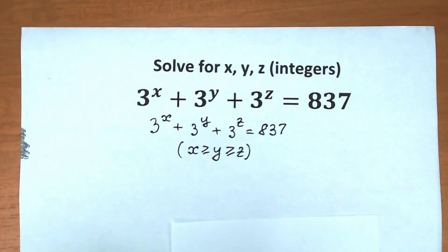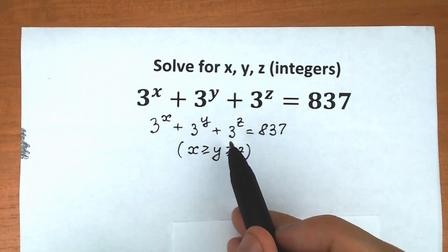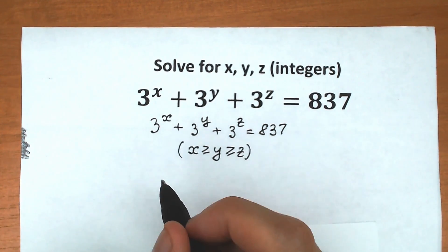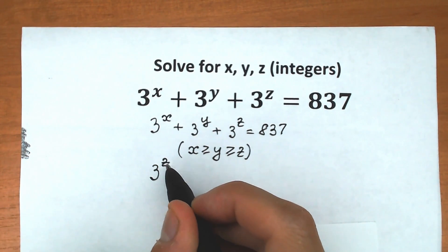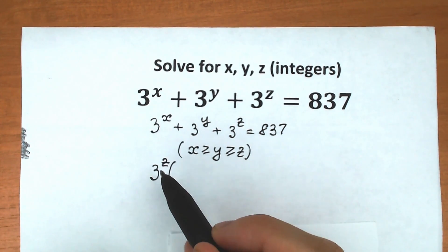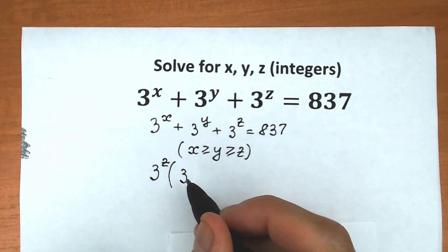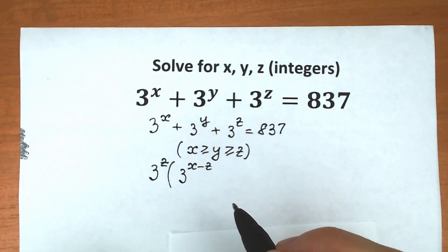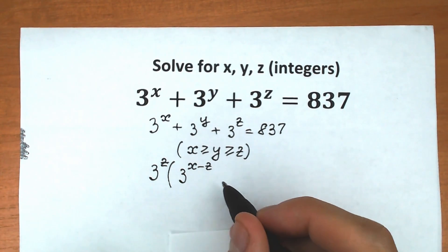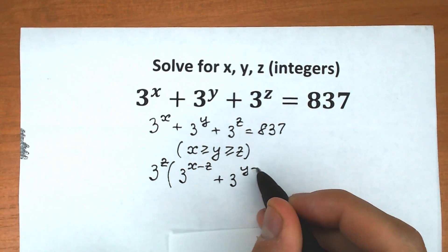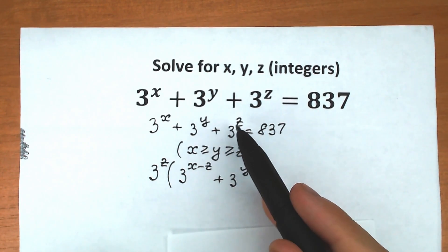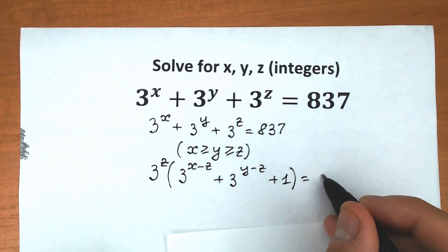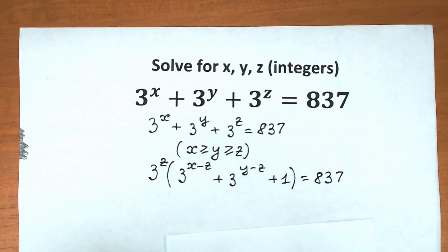Let's factor from the left-hand side — let's factor 3 to the power z. If we factor 3 to the power z from this expression, we have 3 to the power z, and inside parentheses we have 3 to the power x minus z, plus 3 to the power y minus z, plus 1, which is equal to 837.